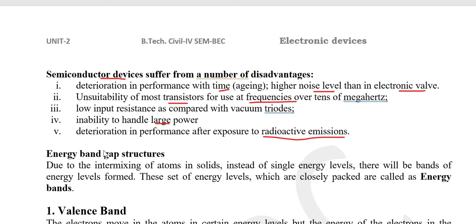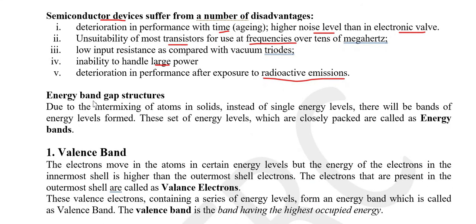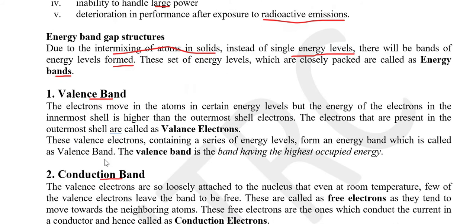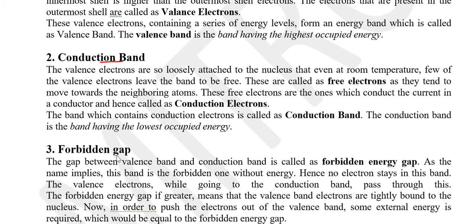Now, the energy band gap structure of a semiconductor is as follows. What is energy band gap structure? Due to the intermixing of atoms in solids, instead of single energy levels, there will be a band of energy levels. These sets of energy levels are termed as energy bands. There are mainly three types of bands found in the energy band gap structure: the valence band, the conduction band, and the gap between these two — the valence and conduction band — is termed as the forbidden gap.